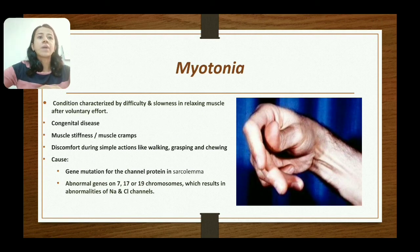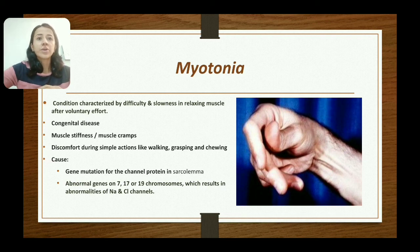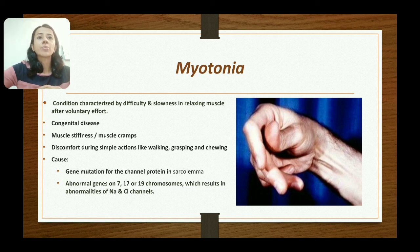The next disorder is myotonia, a condition characterized by difficulty and slowness in relaxation of the muscle after a voluntary act. It is a congenital disease with muscle stiffness and muscle cramps. The person has difficulty during simple actions like walking, grasping, and chewing. It is caused by mutation of the gene for channel proteins — mainly sodium and chloride channel protein genes. Various types of myotonia are due to clinically abnormal genes on chromosomes 7, 17, and 19.